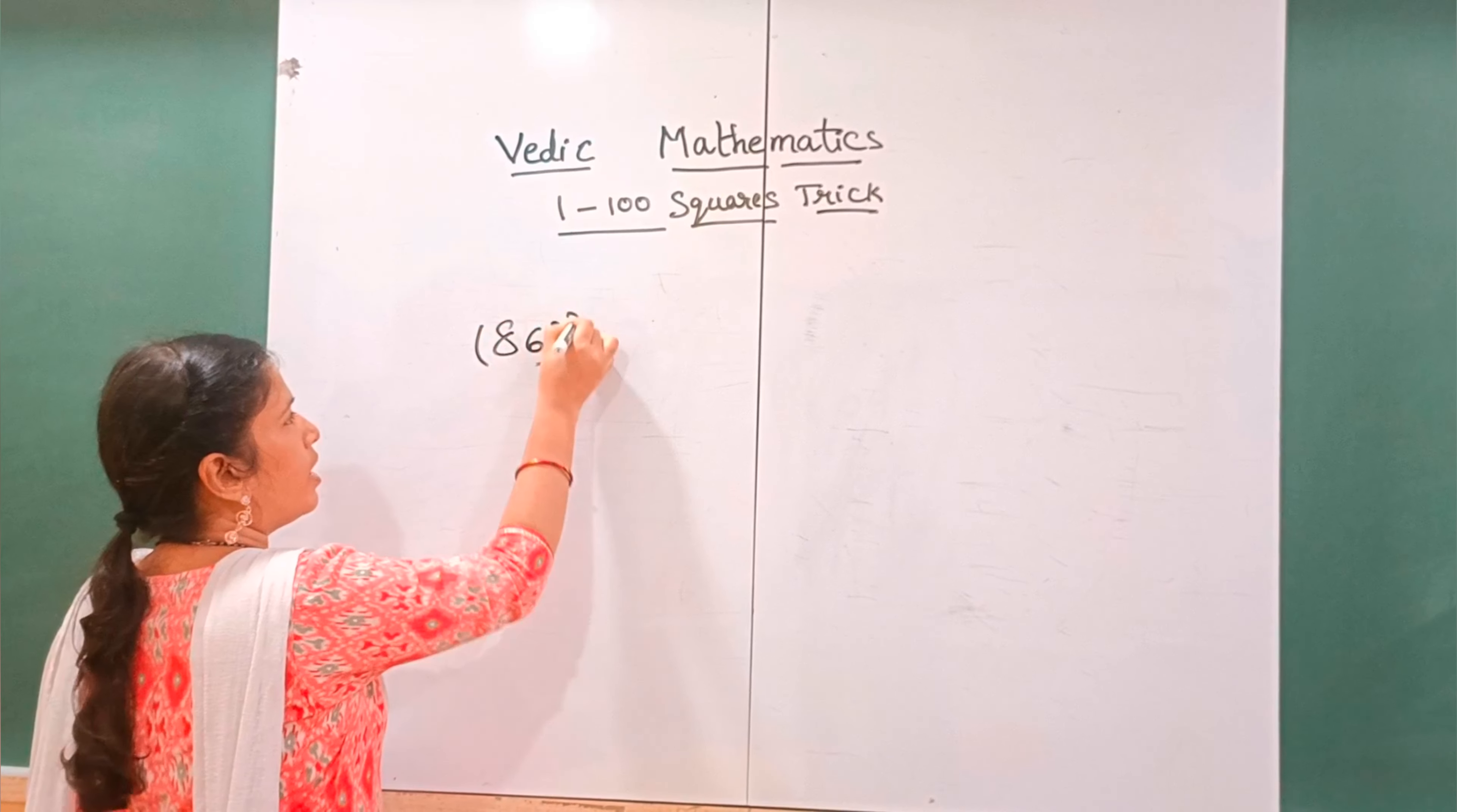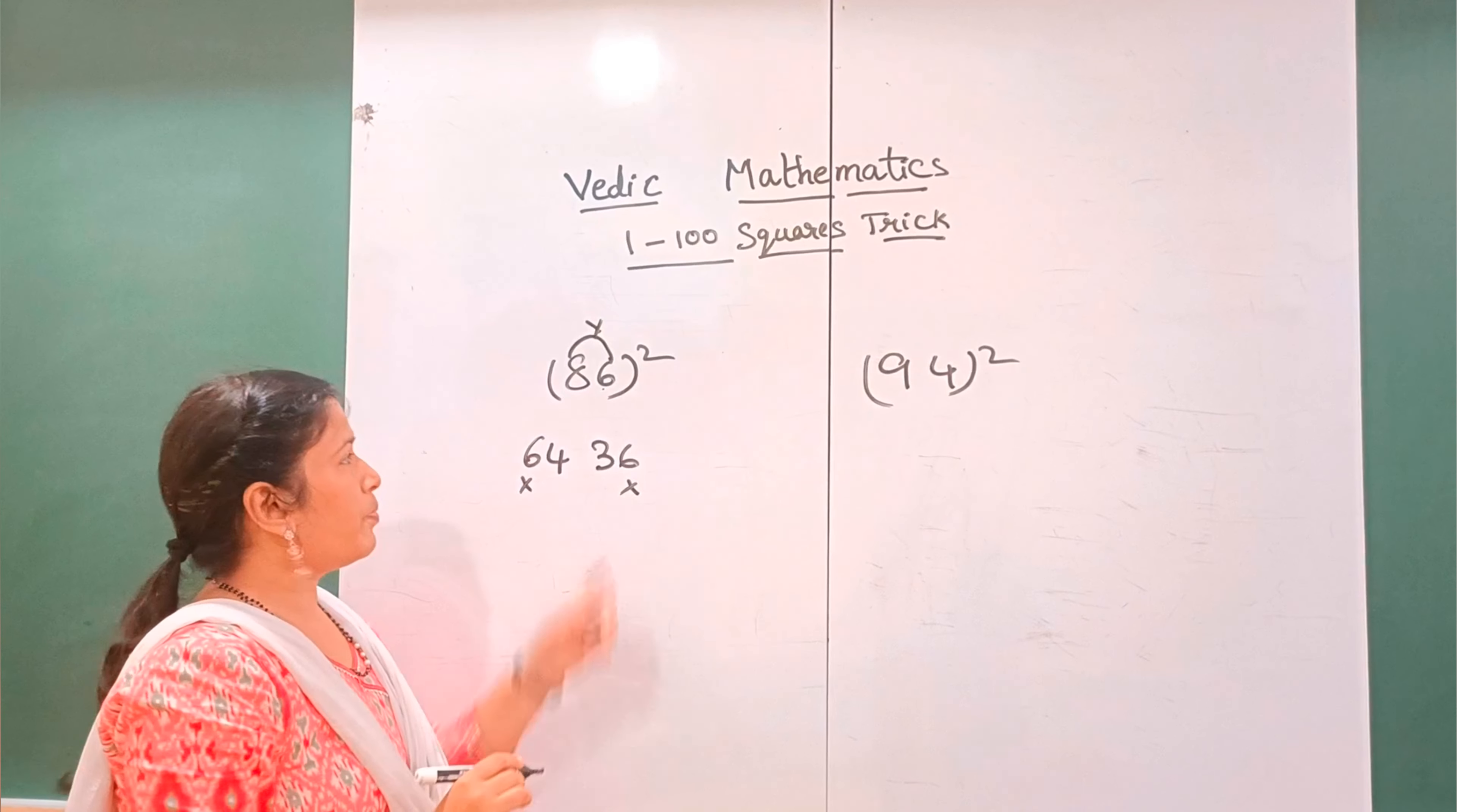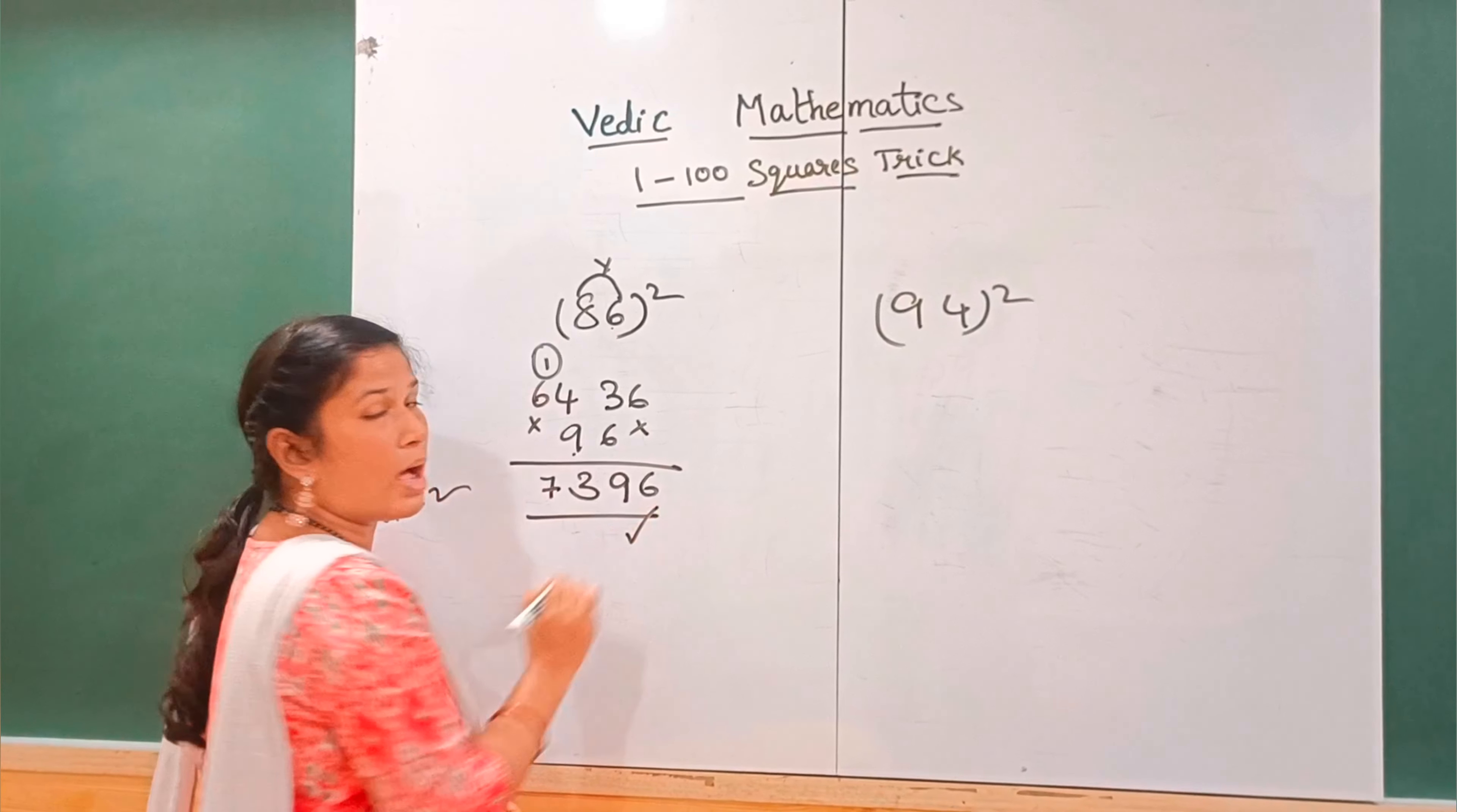Now more random numbers: 86 whole square and 94 whole square. Okay, 86. 8 eights are 64. 6 sixes are 36. So first, this is the answer. So 8 times 6 are 48, 48 into 2, 48 into 2 is 96. 96. Okay, so 6 plus 3 is 9, 9 plus 4 is 13. And 1 carry. This is 7. Okay, this is the answer.